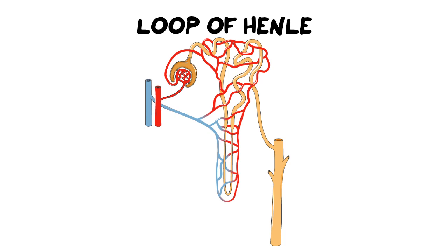Let's get into the video now and recap some things we've already covered, starting with the nephron. In previous videos we covered what happens in the glomerulus — glomerular filtration — and then we had a video on the proximal convoluted tubule where we looked at reabsorption of nutrients. Now what we're going to focus on is the loop of Henle and its really important process called osmoregulation.